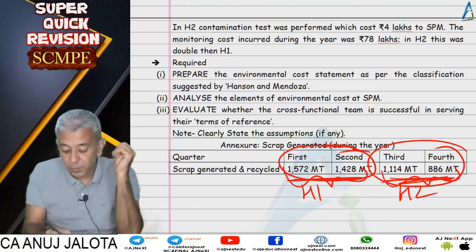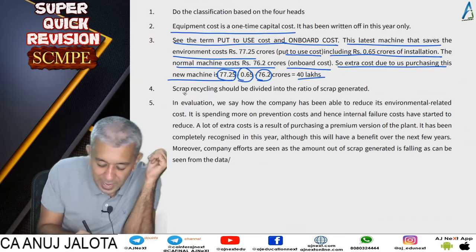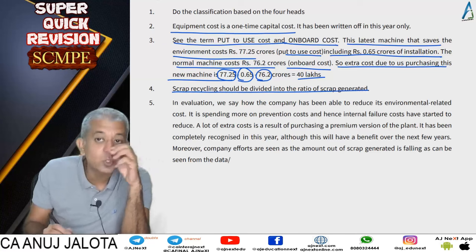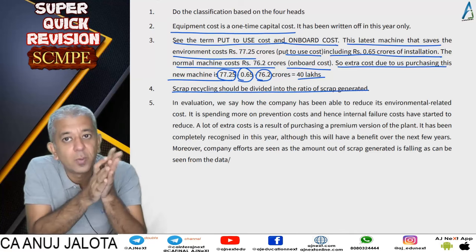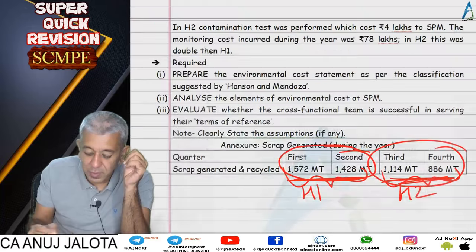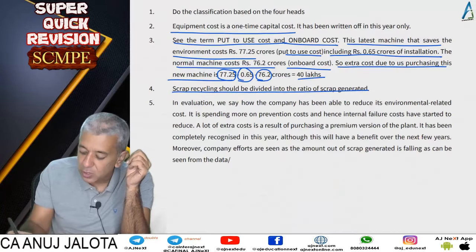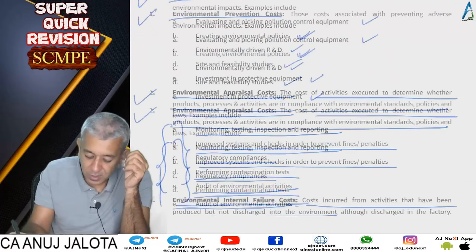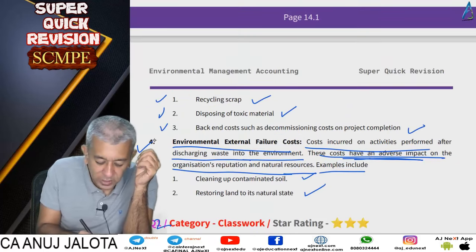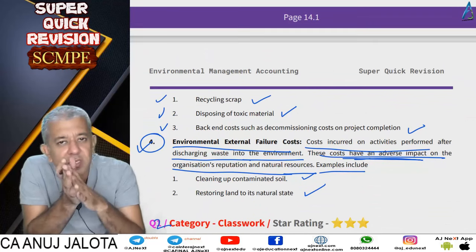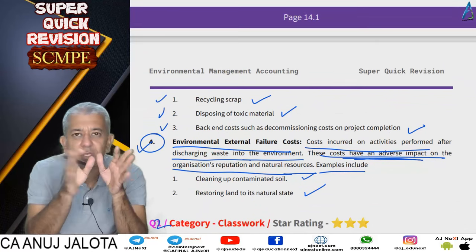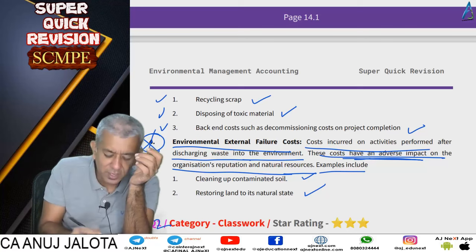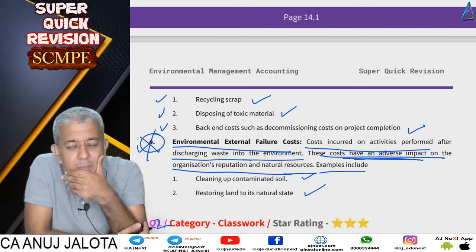Scrap recycling cost was divided in the ratio of scrap generated in each half. Looking at the data, the amount of waste was decreasing from H1 to H2 - that is a positive sign, which should be noted in your comments. Regarding the fourth head - external failure cost - it was zero because the company has a policy of discharging zero waste into the environment.